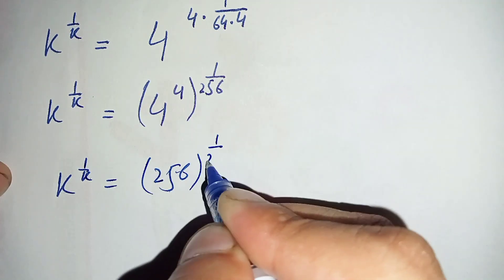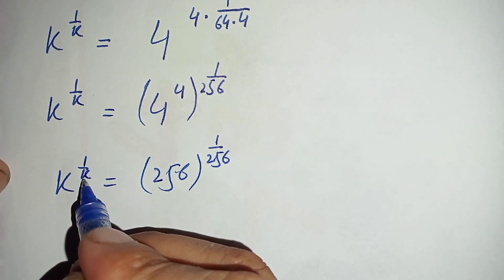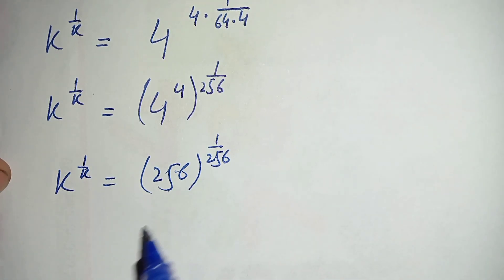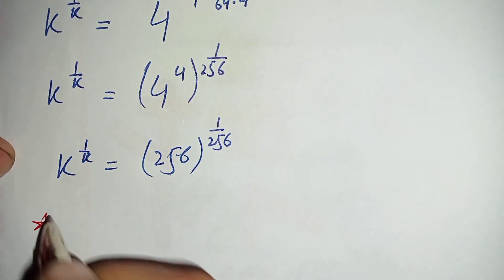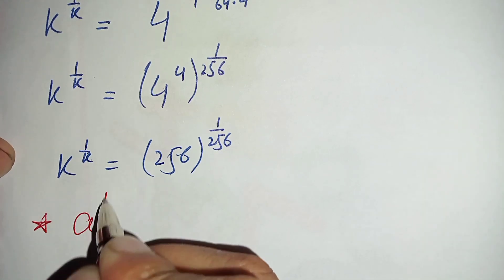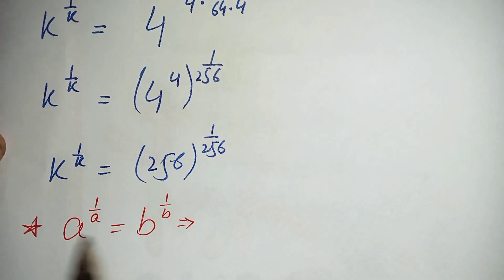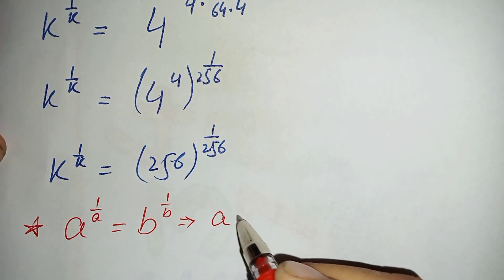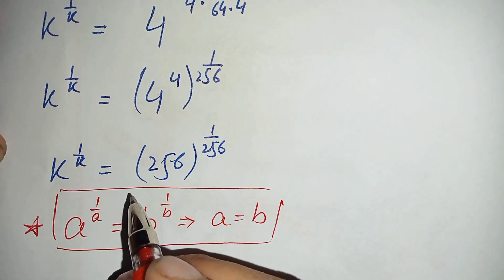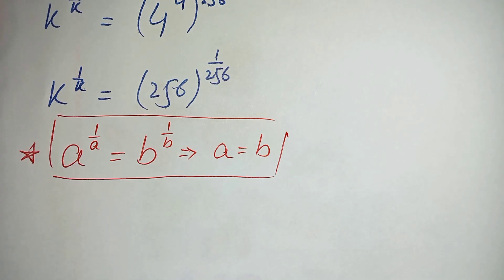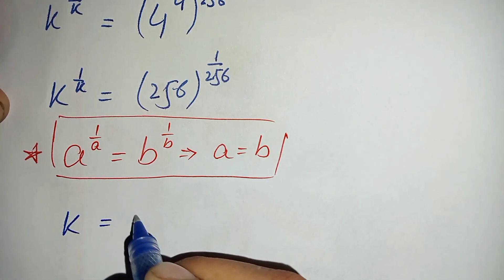Looking at both sides, the base and the number in the power are in the same form. We apply the exponential math property: when a raised to power 1 over a equals b raised to power 1 over b, then a equals b. Using this property, we can compare the bases of both sides.